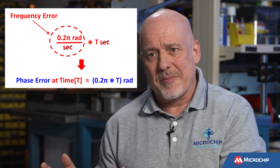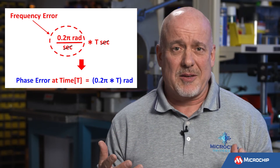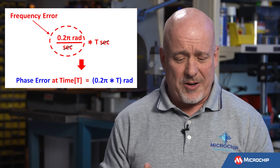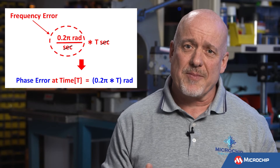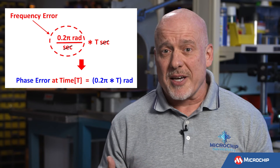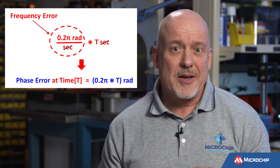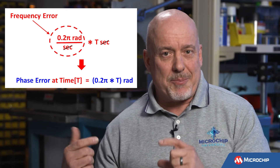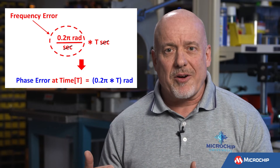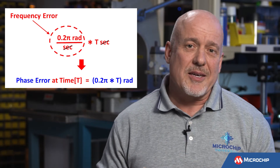We can go from phase error to frequency error in the case of a constantly changing phase, and we can also go the other direction: take a frequency error and convert it to phase error. If we know the constant frequency offset between two clocks, we can calculate how much the phase error increases over time. Using our example, we have a frequency offset of 0.2π radians per second. If we multiply this frequency error by the elapsed time T, we can calculate the phase error at any time T, which is 0.2π times T.